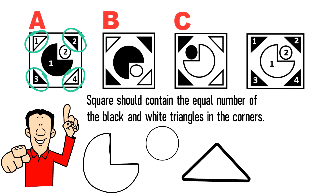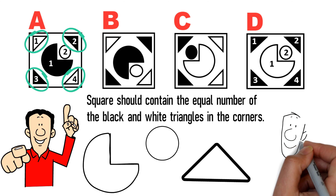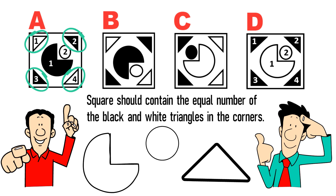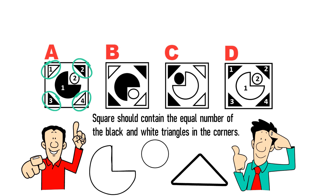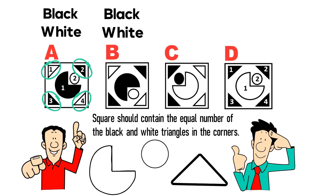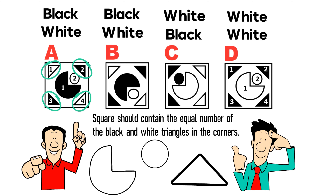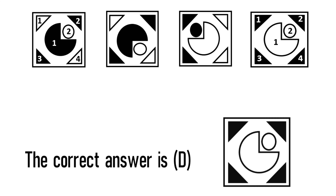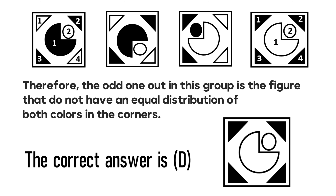The same pattern exists in shape B — two white and two black triangles — and in shape C — two black triangles on the left and two white on the right. But in choice D there are four black triangles in all corners. The circles do not have a pattern and are there primarily to confuse you. So the odd shape — the one that doesn't belong — is choice D, which does not have equal distribution of triangle colors in the corners.